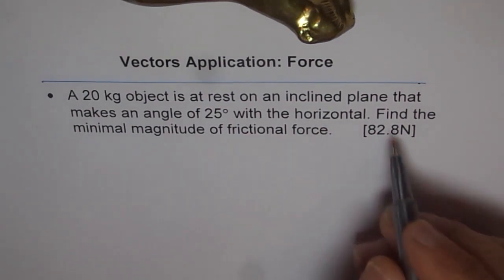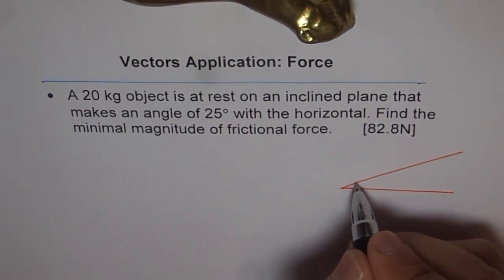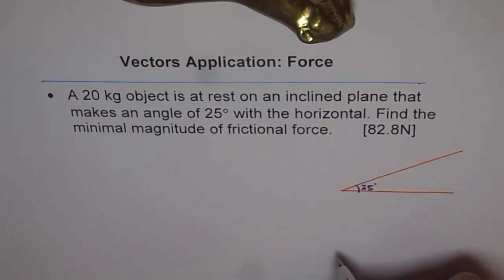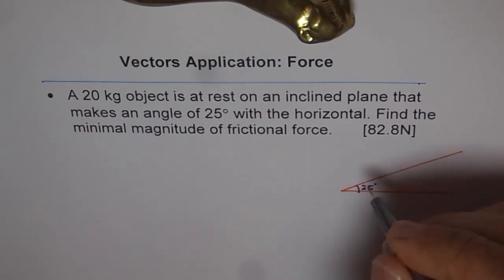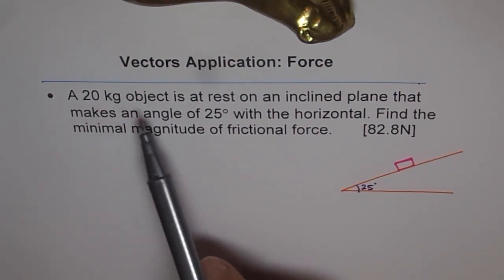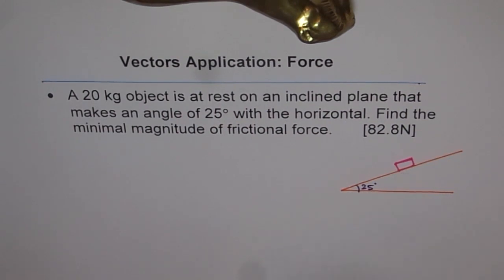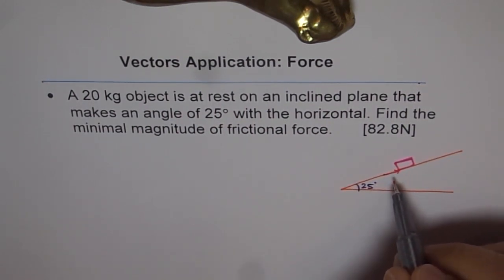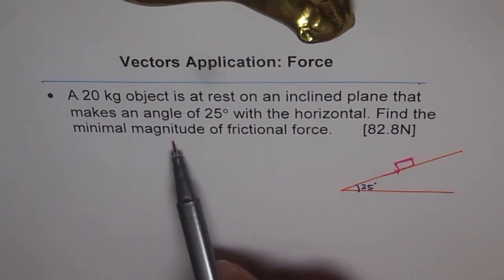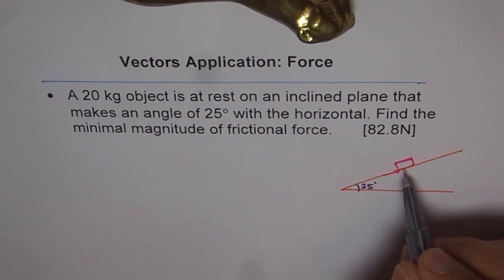Let's try to understand this. We have an inclined plane — this is the horizontal, and it makes an angle of 25 degrees. There is an object of 20 kilograms on it. This object would naturally slide down the inclined plane. Since it is at rest, there must be some force keeping it there, and that force is a frictional force. How much is that equivalent to? That is the question.